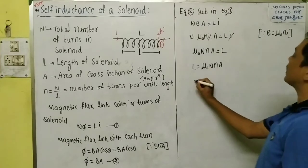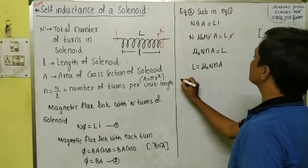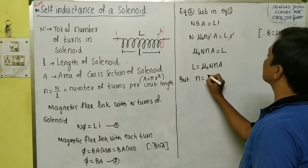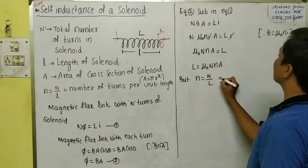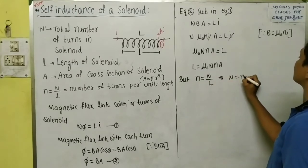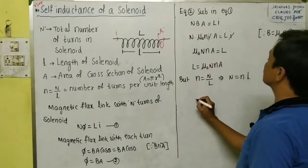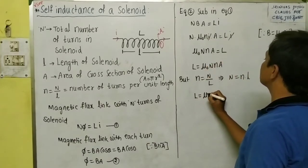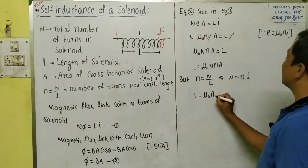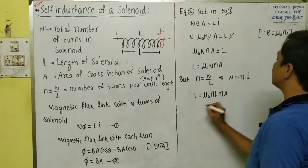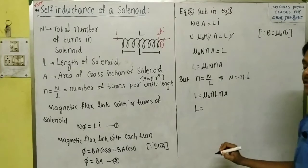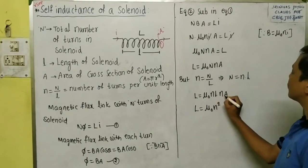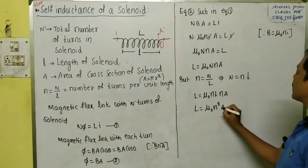We know that small n = N/l, so capital N = n·l. Substituting this into the equation L = μ₀·N·n·A, we get L = μ₀·(n·l)·n·A. The final formula for self-inductance is L = μ₀·n²·A·l.